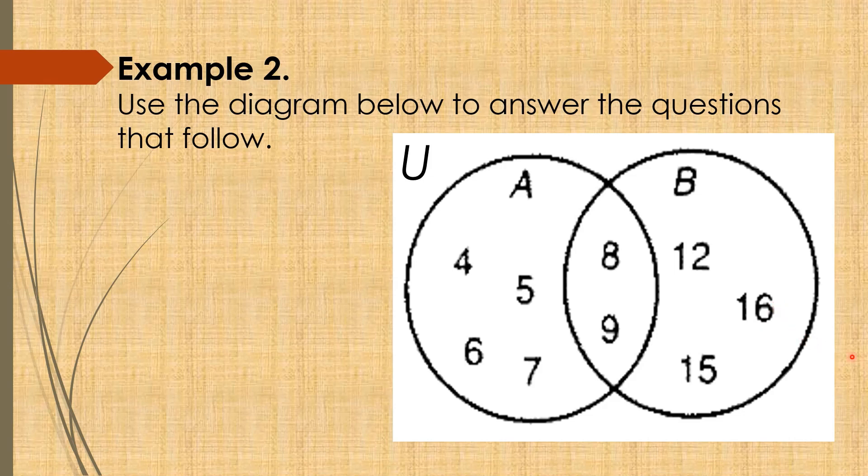Let us now answer the question. A union B. Again, when we said union, you just have to combine o pag samasamahin lang natin lahat na elements meron ang A at B. So, A union B is equal to 4, 5, 6, 7, 8, 9, 12, 15, and 16. Write the elements in ascending order or from lowest to highest.